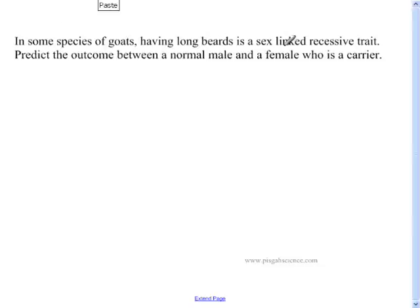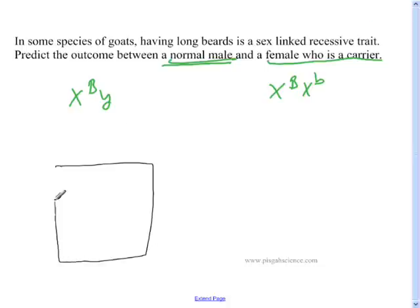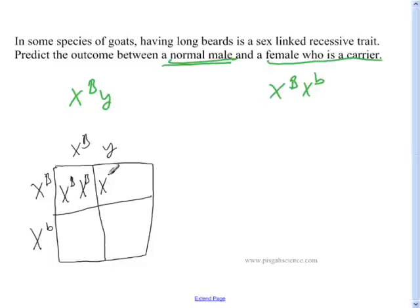In some species of goats, having long beards is a sex-linked recessive trait. Predict the outcome between a normal male and a female who's a carrier. A normal male is going to be written this way. A female who's a carrier, as we discovered in the last problem, is going to be written this way. And you're just going to fill out your Punnett square. We're not going to worry about genotype. I just want to know phenotype.